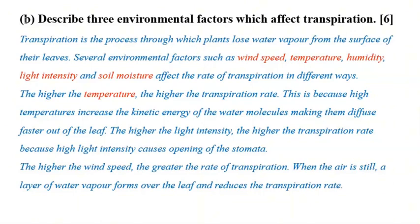When the air is still, a layer of water vapor will form over the leaf and reduces the transpiration rate. By explaining these three points you'll get the six marks. Make sure your explanation is based on three points — or if you want, you can even explain humidity alone and you'll get more marks. This is how you accumulate the six marks.